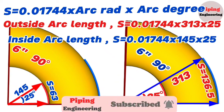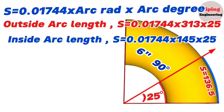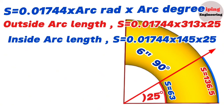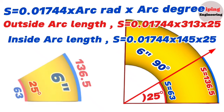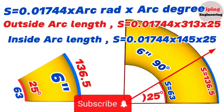This calculation should be done on the actual elbow piece. Mark the outer arc at 136.5 mm and inner arc at 63 mm on the 6-inch elbow, then connect these two points along the elbow. This line is the cutting line for the 25-degree elbow cut from the 90-degree elbow. By using this method you can calculate arc length and cut any degree elbows.